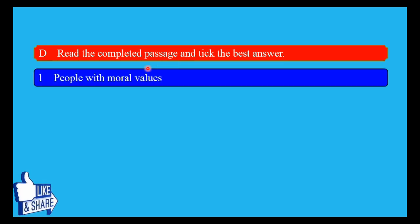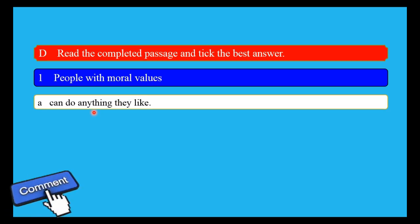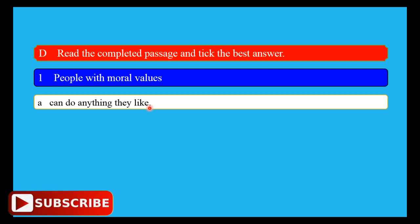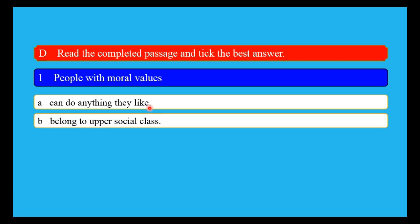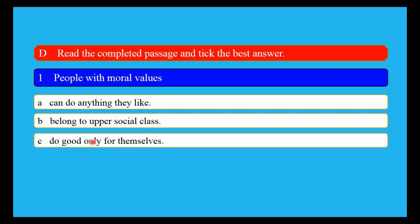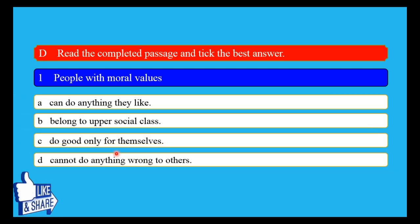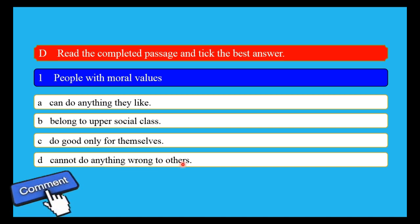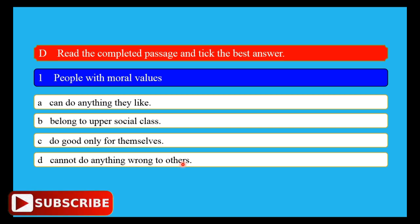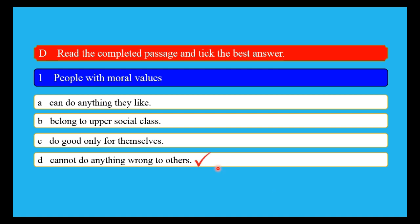Comprehension questions: 1. People with moral values — can do anything they like? No. 2. Belong to our social class? 3. Do good only for themselves? No. 4. Cannot do anything wrong to others? Yes — this is correct. 5. Tolerance means allowing others to say and do as they like.